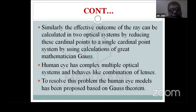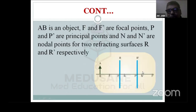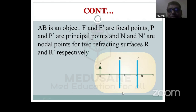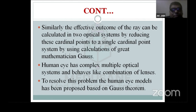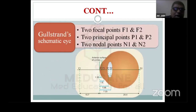To understand the complex multi-lens optical system of the human eye, various eye models have been proposed: the Gullstrand Schematic Eye, the Listing's Reduced Eye, and the Donder's Simplified Eye. These are all theoretical models proposed to understand the focal, principal, and nodal points of a human eye. The Gullstrand Schematic Eye has two focal points, two principal points, and two nodal points — total of six points.